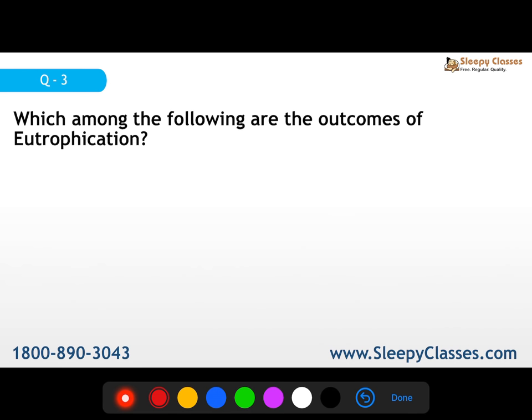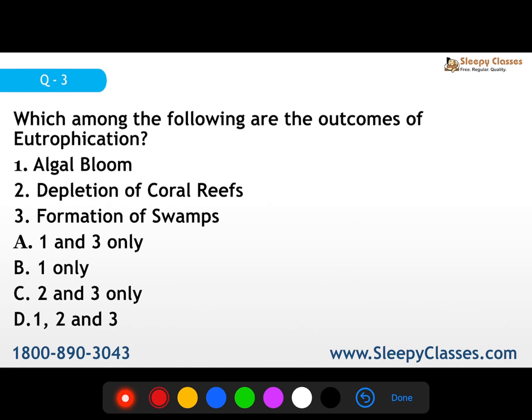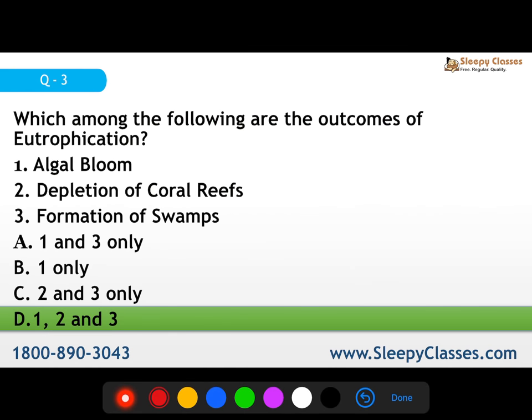The third question: which of the following are outcomes of eutrophication? The options are algal bloom, depletion of coral reefs, and formation of swamps. The correct answer is all three — 1, 2, and 3.